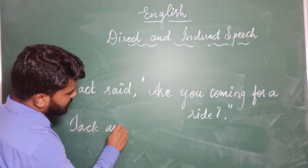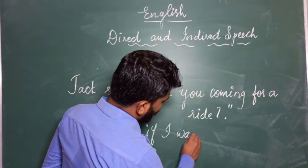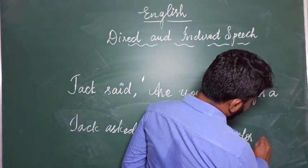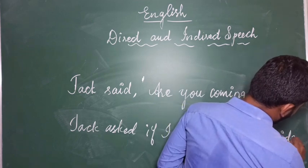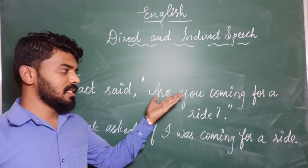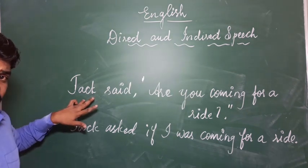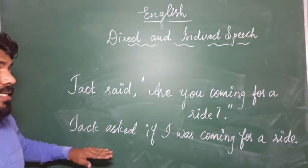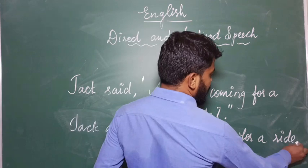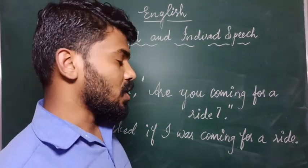Jack asked if I was coming for a ride. The major change you see here: the question becomes a statement. When you convert an interrogative sentence, it becomes an assertive sentence. Though there is a question mark in direct speech, in indirect speech we need a full stop. That is all about yes-or-no questions.